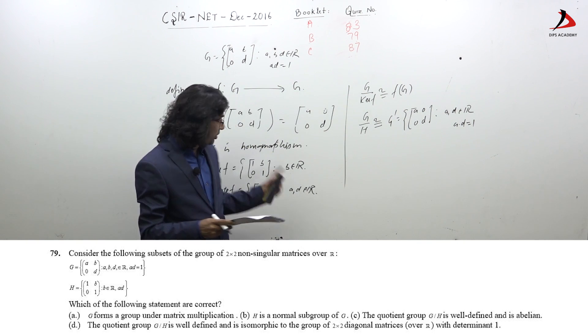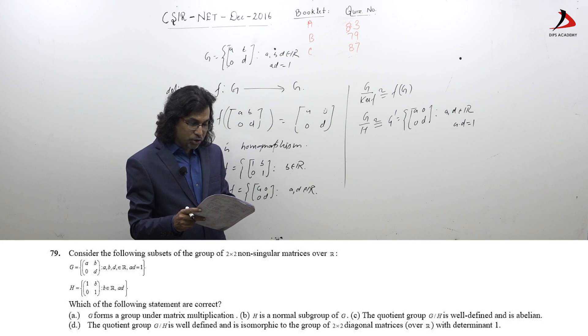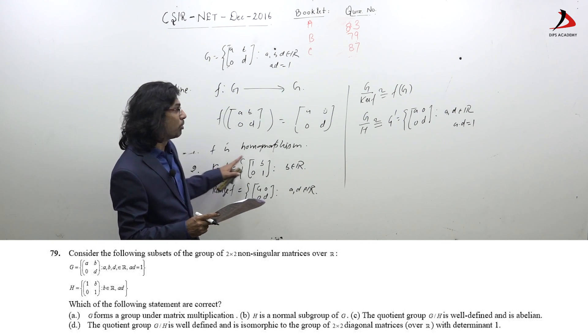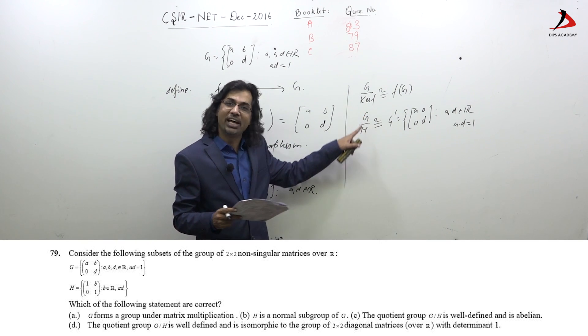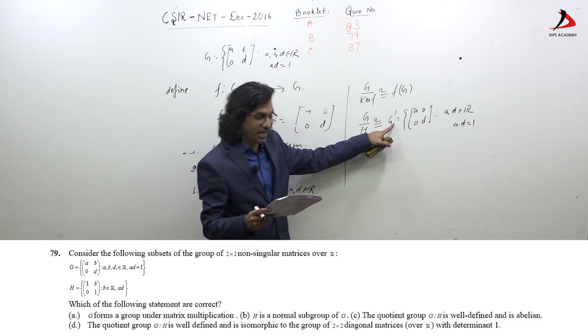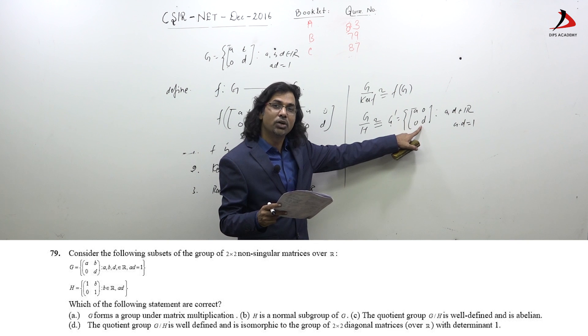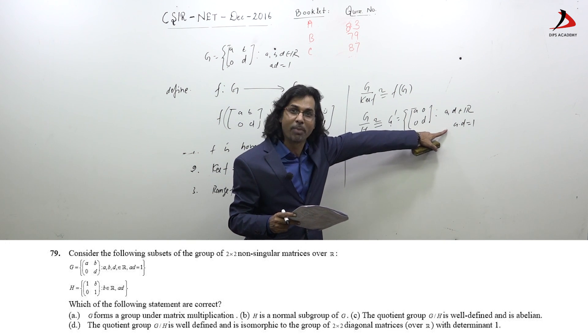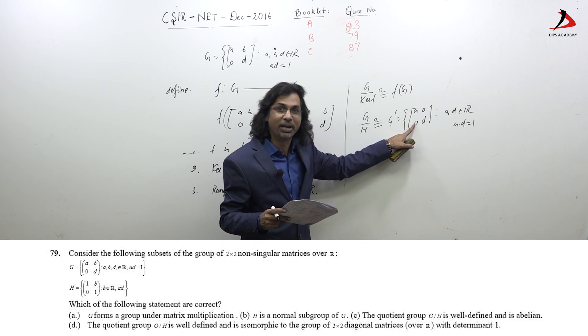Option 2 is correct because it is the kernel. Option 3 is also correct because H is a normal subgroup. Whenever that is normal, G/H is well-defined and is isomorphic to G', which is the collection of diagonal non-singular matrices, and such a group is abelian.